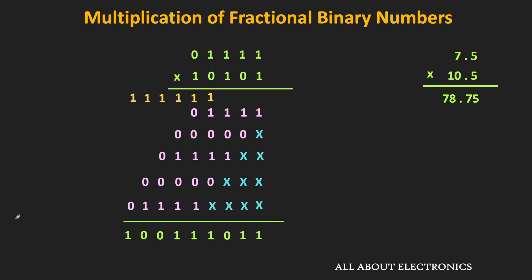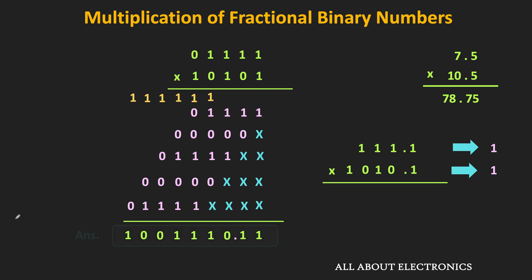As a final step, we just need to put the binary point at the appropriate location. In both numbers, the number of digits after the binary point is equal to 1, and their summation is equal to 2. Therefore, starting from the LSB of the result, we need to put the binary point after 2 digits. And therefore, this is the final result after the multiplication. So in this way, we can also multiply two fractional binary numbers.